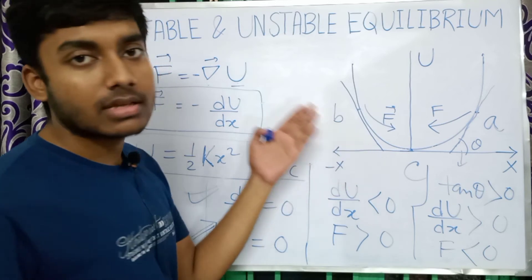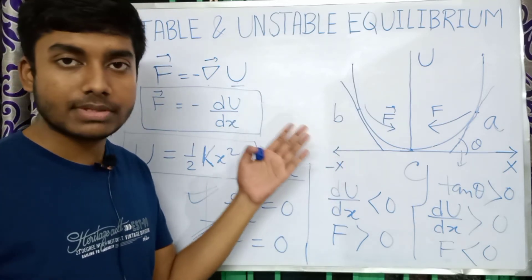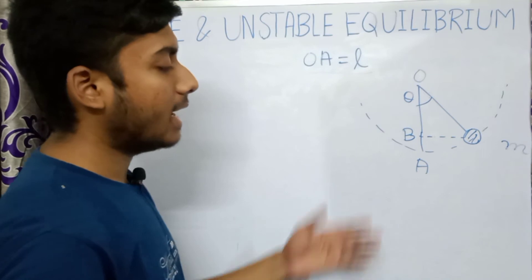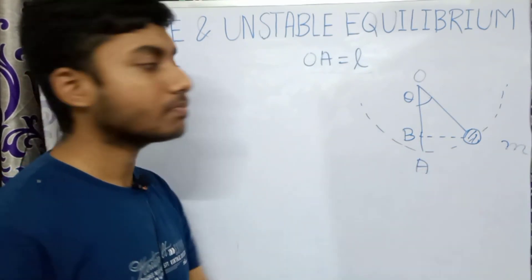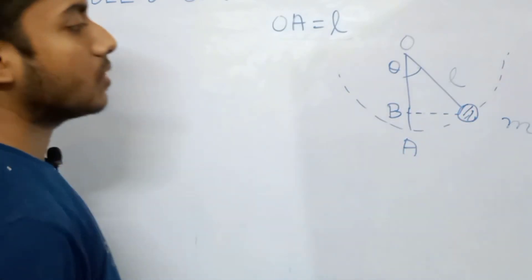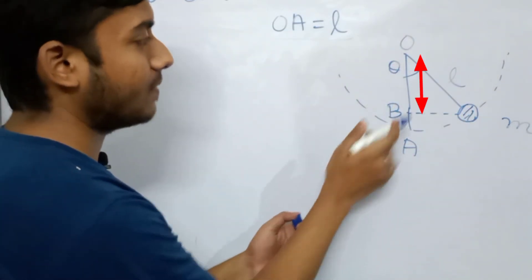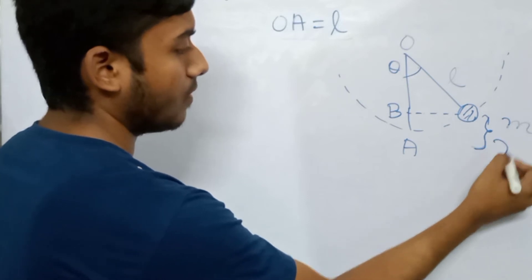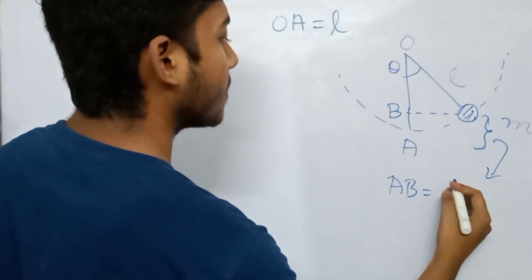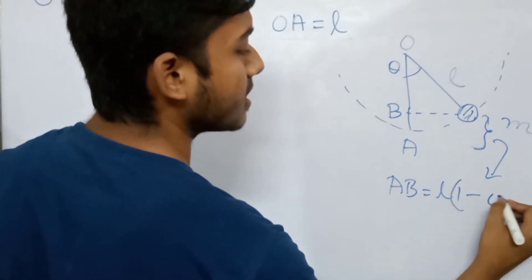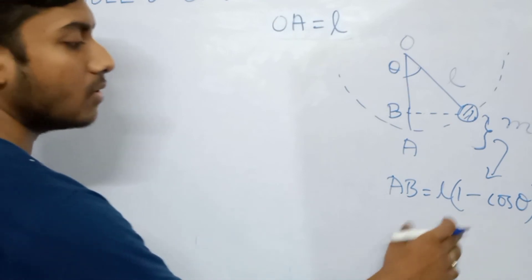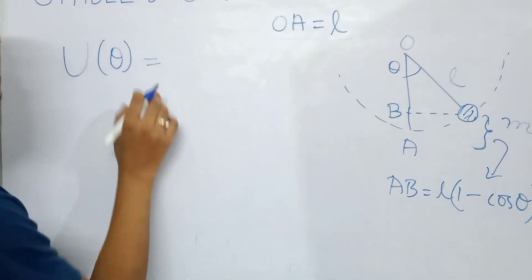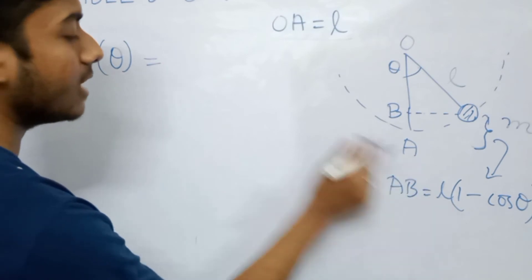Now we will discuss why C is a stable equilibrium point, and we will also discuss unstable equilibrium. Suppose we consider a pendulum of length OA equals L supporting a mass m. The length OB will be L cos theta, so the length AB will be L minus L cos theta, that is L into (1 minus cos theta). So the potential energy, which is a function of theta, will be U(theta) equals mgL(1 minus cos theta).